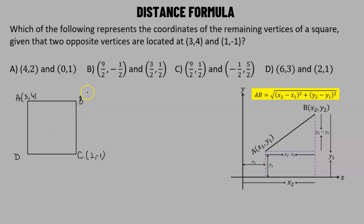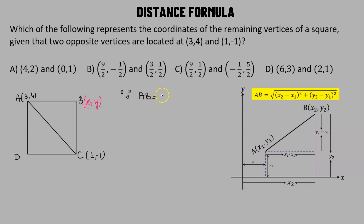To begin, we'll start with B. Let's say the coordinate of B is (X, Y). We will come to D in a moment. To find the coordinate of B — that means finding the value of X and Y — all we have to do is join points A and C, which gives us the diagonal of the square. Clearly, the length AB equals the length BC, since all sides of a square are equal. If we find AB and BC and equate them, that helps us find X and Y.